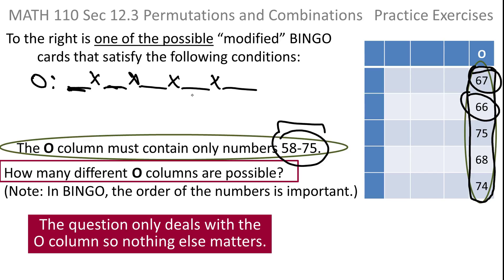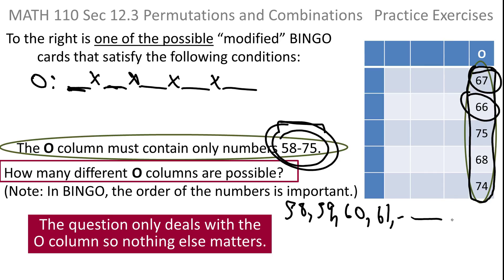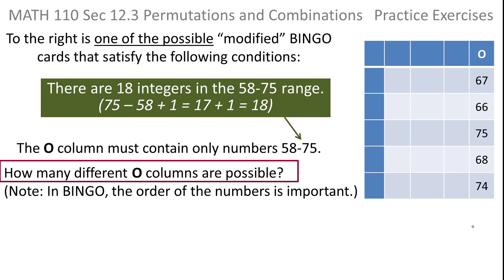What I need to know is how many numbers there are between 58 and 75 — in other words, what is my pool of choices? I could just write out 58, 59, 60, 61, all the way to 75, but that would take a while. I know that I can count consecutive integers by taking the largest minus the smallest and adding one. The largest number is 75, the smallest is 58. Subtracting and adding one gives you 18.